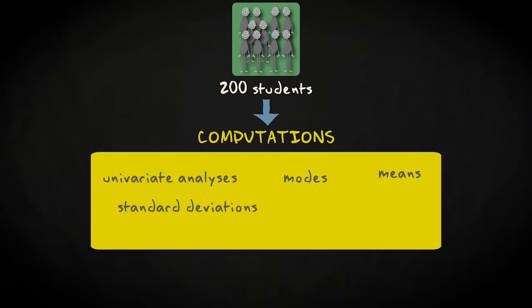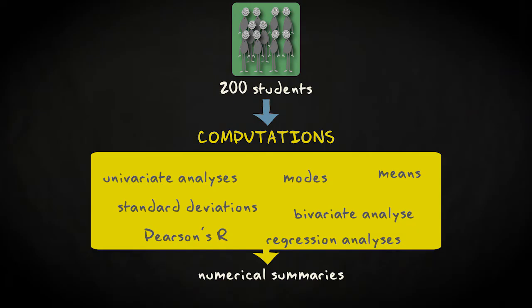You can do univariate analysis and compute modes, means, and standard deviations. You could also do bivariate analyses and compute Pearson R correlation coefficients, or do regression analyses. All numerical summaries resulting from these computations are fully based on your sample, and they are called statistics.